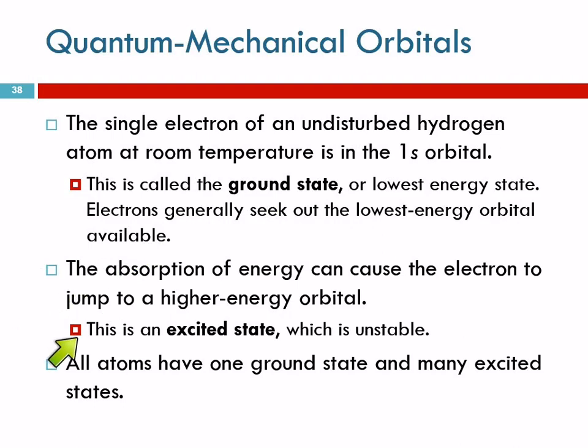Absorbing energy causes them to go up to a higher level. That's the excited state. Unstable. Can't stay there. Come back. All atoms have one ground state, where all of their electrons are in the lowest energy orbitals possible. They have many excited states. They can have just a gazillion, probably limitless, really, number of excited states. So, we generally just talk about the ground state.